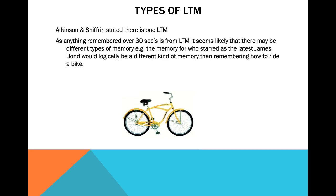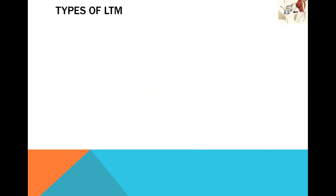Your knowledge of something — like a capital city or the actor who played a certain role — is different from knowing how to tie your shoelace. Both are long-term memories, things you'd hope to know for a few years, but understandably they're quite different sorts of memories. This is what we're talking about when discussing different types of long-term memory.